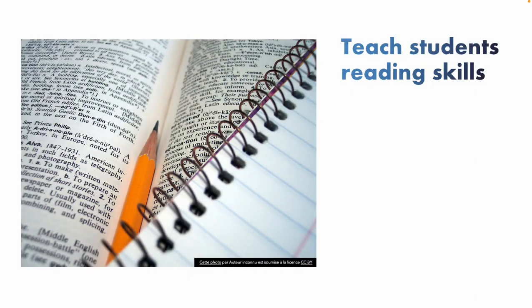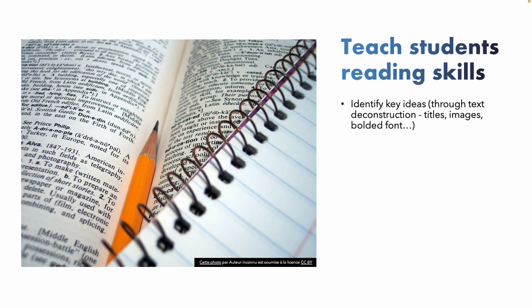To do that, we really need to teach students some reading skills. We need to teach them how to identify key ideas — for example, before students read a magazine article, get them to guess what it might be about by looking at the image, the title, subtitles, and pull quotes, to really notice the features of the text. That will help them identify key ideas and develop those reading skills.